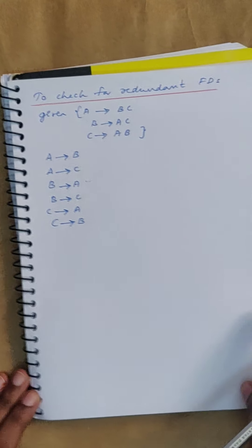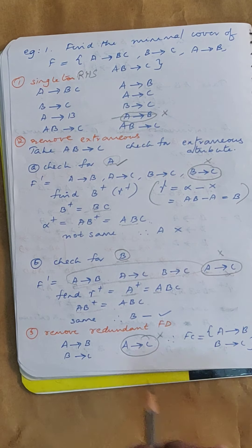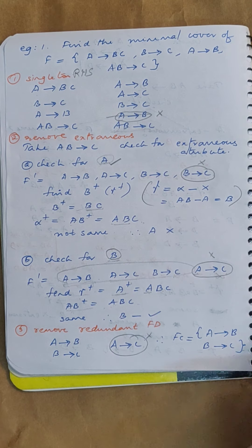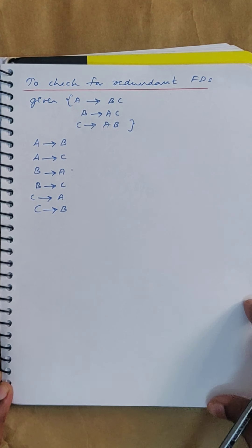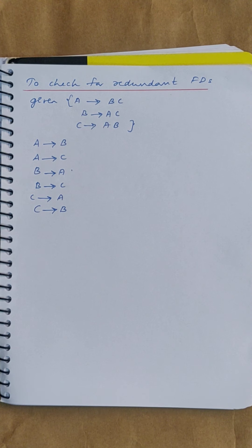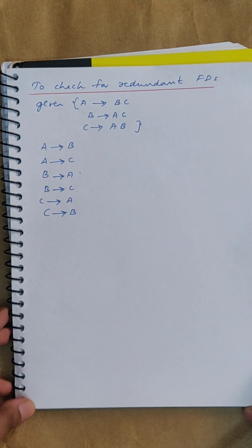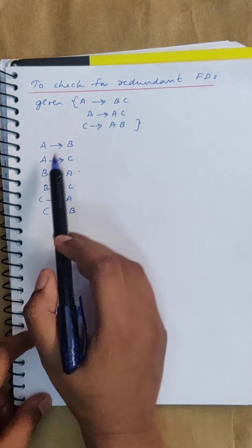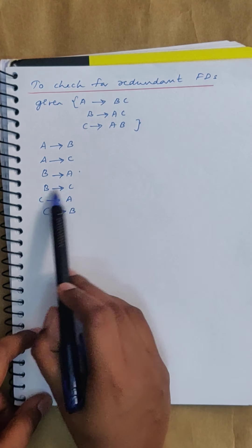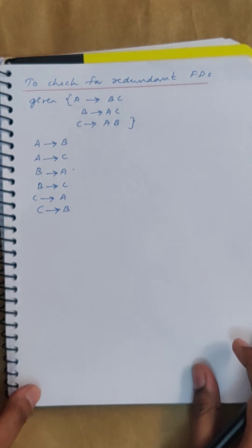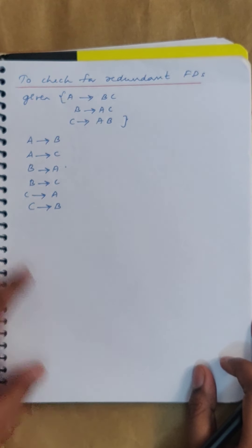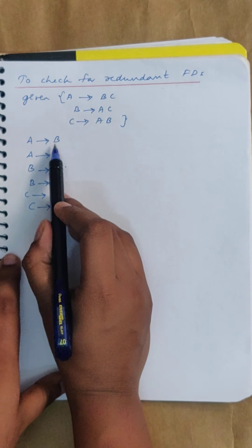Now I have taken one more case. In the previous example we easily found if a functional dependency is redundant, but there can be cases where it is not so obvious. There is an easy way to find out: take each functional dependency and check if it is redundant or not. The given FDs have been decomposed as A→B, A→C, B→A, B→C, C→A, C→B. First check if A→B is redundant.